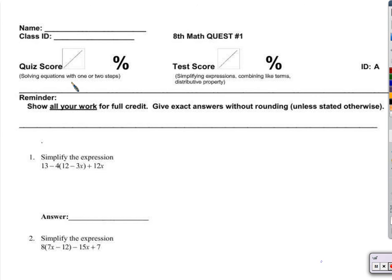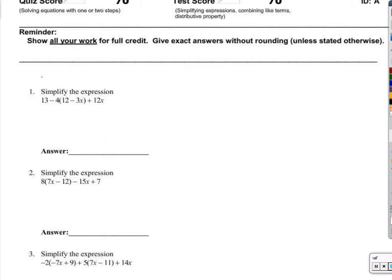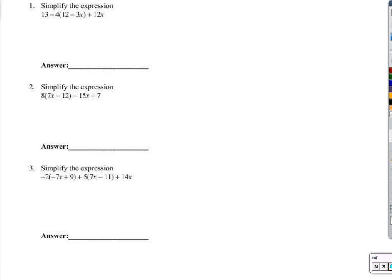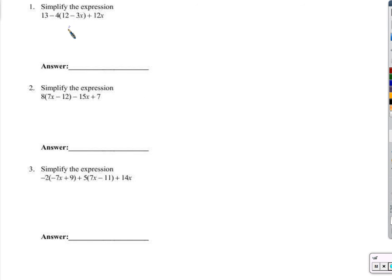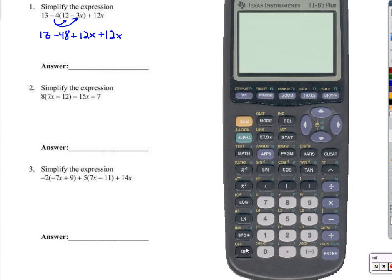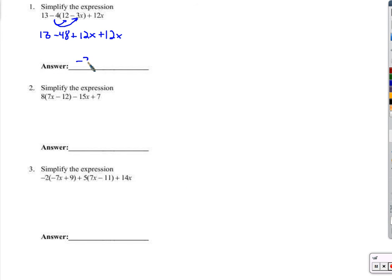Hey everybody, thanks for tuning in to watch this. Let's work through this quest together. Question number one. We're going to simplify this expression. I think the easiest thing to do here would be to distribute the negative 4 to the 12 and the negative 3x. So we'll get negative 4 times 12 is negative 48. Negative 4 times negative 3x is going to be a positive 12x. Remember negative times negative is positive. Plus 12x. So 13 minus 48 is going to be negative 35.